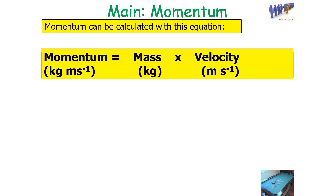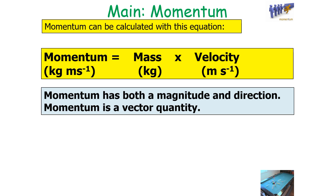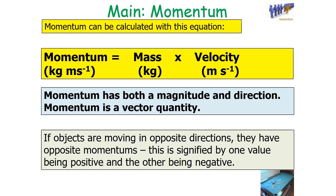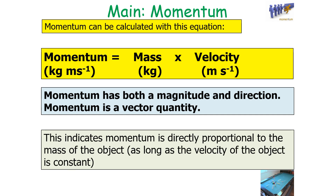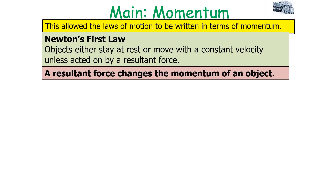The equation for momentum is p = mv. Momentum has both magnitude and direction — it is a vector quantity. Objects moving in opposite directions have opposite momenta, signified by one value being positive and another negative. This indicates that momentum is directly proportional to the mass of the object (at constant velocity) and directly proportional to the velocity of the object (at constant mass). This allows Newton's laws of motion to be written in terms of momentum.